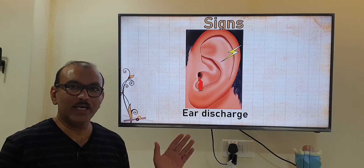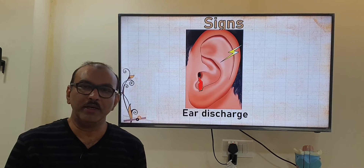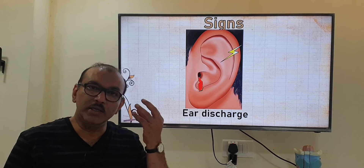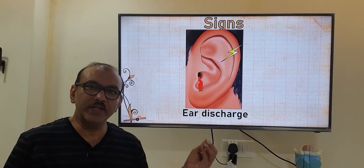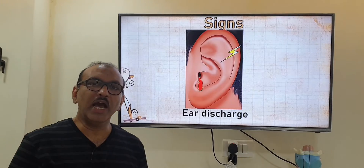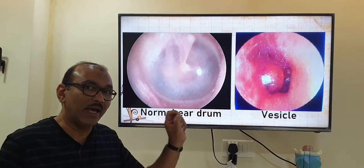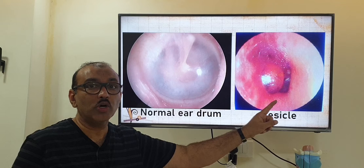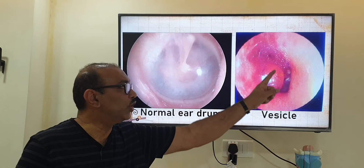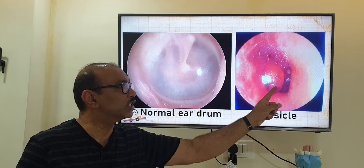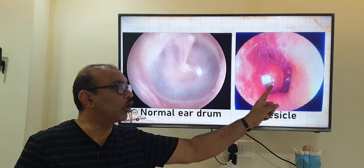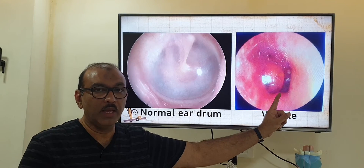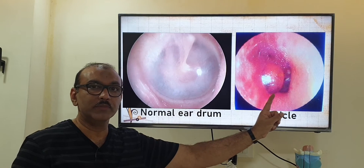On examination, the patient will be in severe pain and agony, and there may be ear discharge. After cleaning, when we introduce a camera and look at the eardrum, you can see a small vesicle or bulla on the eardrum — like a raindrop — and this is compared to what a normal eardrum looks like.